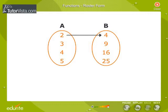2 is the square root of 4, 3 is the square root of 9, 4 is the square root of 16 and 5 is the square root of 25. For each element X in A, there is a unique element Y in B, such that X and Y belong to R.